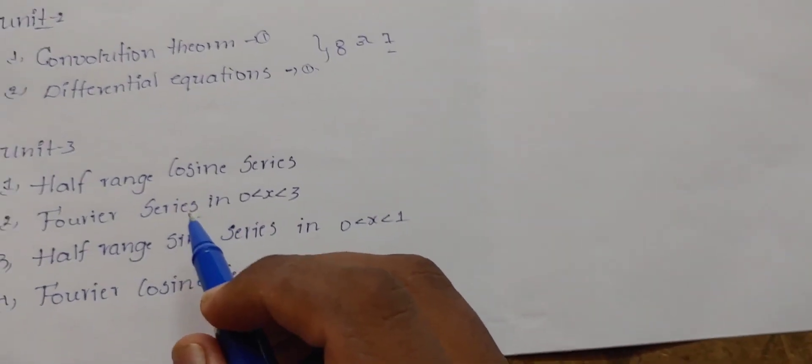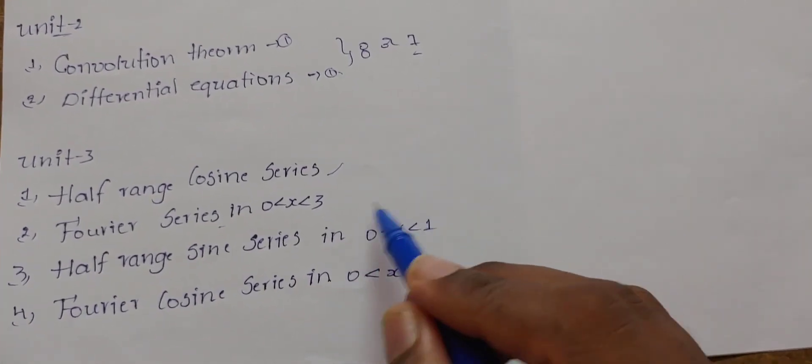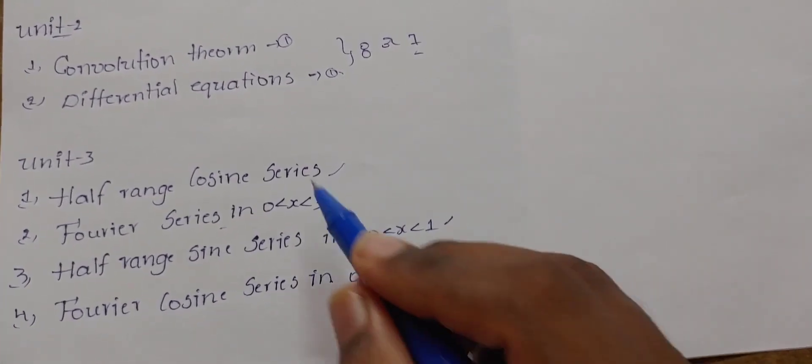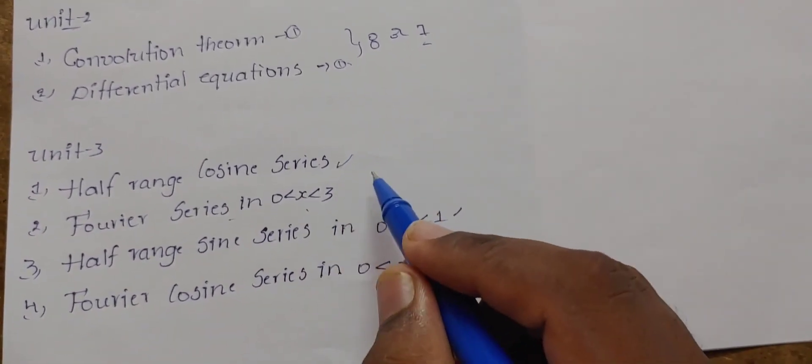Coming to unit 3: half-range cosine series and half-range sine series. When you prepare these two compulsory, you will be simple to use Fourier series and Fourier cosine series. Because this half-range sine series and cosine series depends.